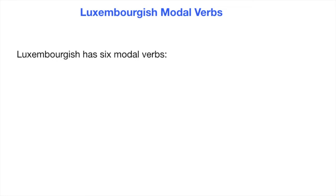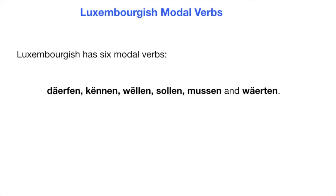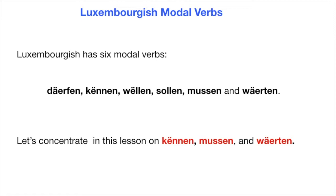Luxemburgish Modalverbs. Luxemburgish has six Modalverbs: Dierfen — to be allowed to; Können — to be able to; Wëllen — to want; Sollen — to should or ought to; Mussen — to must; and Wäerten — will. You can learn the conjugation of all these Modalverbs in another lesson, 'Introduction to Luxemburgish Verbs' — I have put the link under this video. In this lesson, we will concentrate on three Modalverbs: Können, Mussen, and Wäerten.